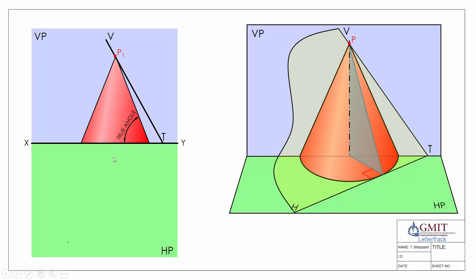That's the front elevation drawn in. We locate the apex in plan view by dropping a line straight down, and now we know the width of the base of the cone. Using our compass, we draw the base of the cone. We know the horizontal trace is a tangent to the base of our cone, so from point t we draw a line tangent to our arc, and that gives us the horizontal trace.